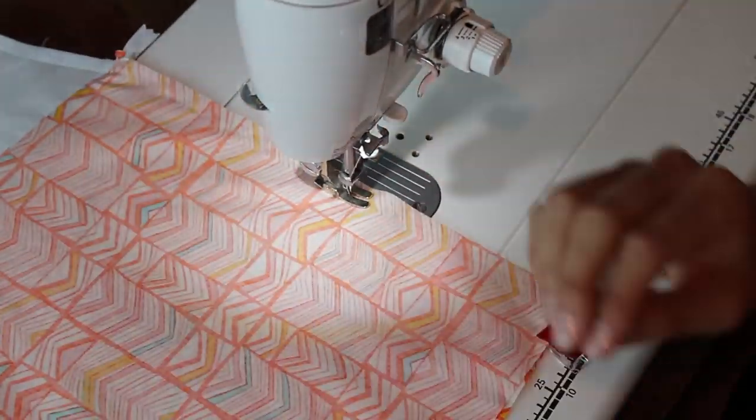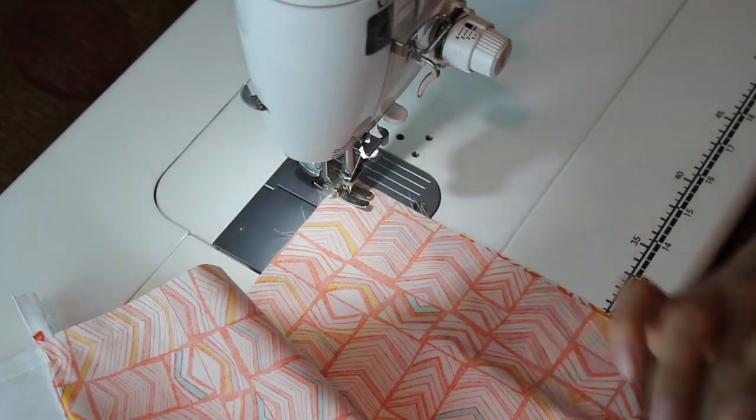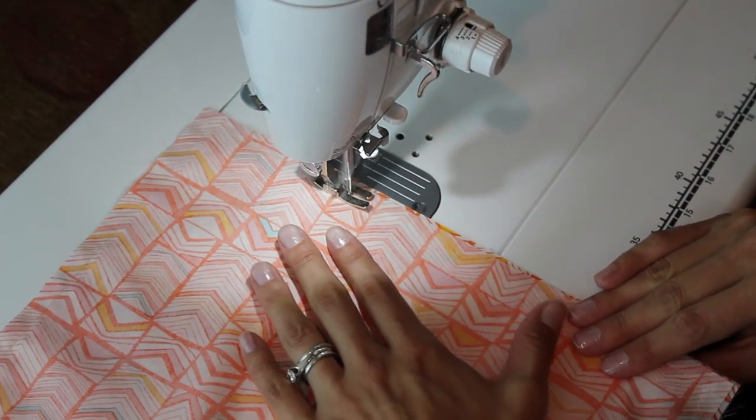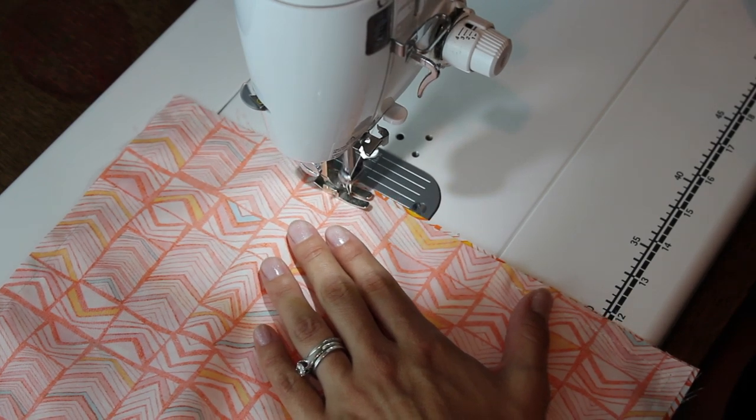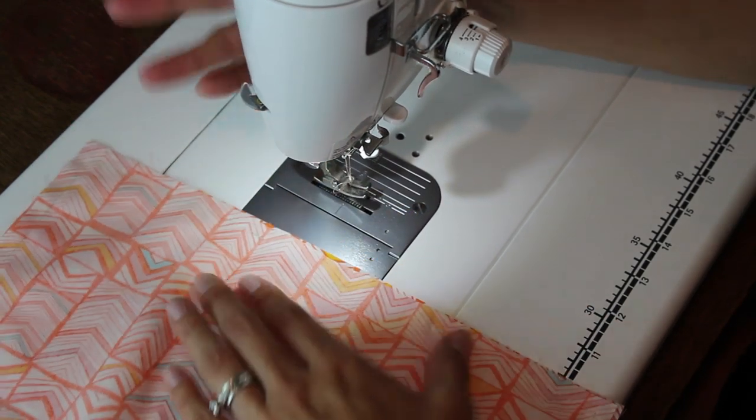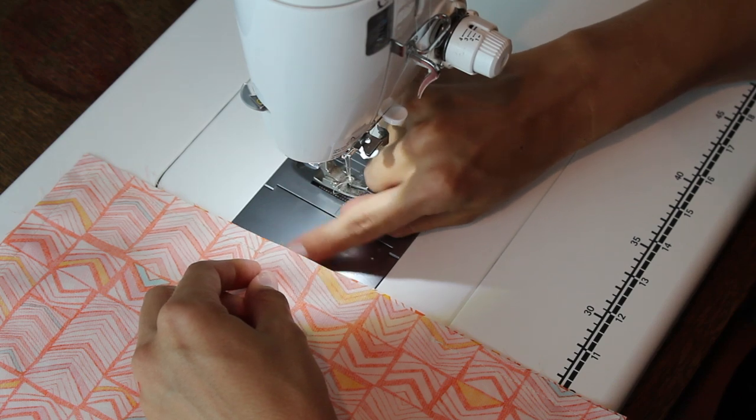Be careful when you're going over your zippers. Sometimes it can be a little bit tricky. Just make sure everything stays nice and lined up. When you get back around, make sure to leave yourself a several inch opening backstitch really well in order for you to flip your bag the right side out.